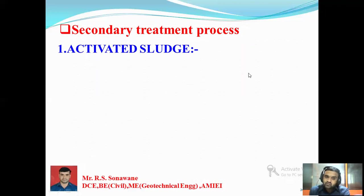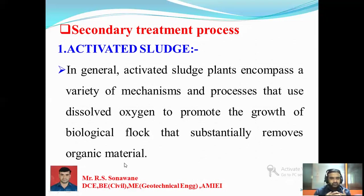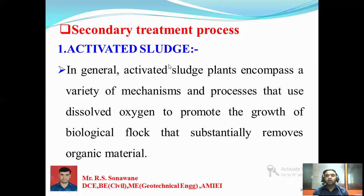The first secondary treatment process is the activated sludge process. The activated sludge plant encompasses a variety of mechanisms that use oxygen to promote the growth of biological floc, which substantially removes the organic material. Biological growth is very important — it happens due to the presence of bacteria which consume oxygen and are able to remove the organic material. This is the basis of the activated sludge process.